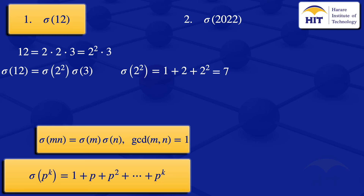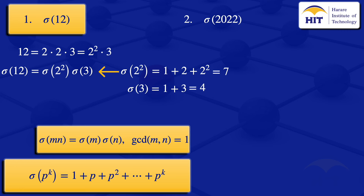Now for sigma(3): 3 is a prime number, so it's 3 to the power 1. Taking p = 3 and k = 1, the formula gives 1 + p, so sigma(3) = 1 + 3 = 4. Substituting these values, sigma(12) = 7 × 4 = 28. So the sum of divisors of 12 is 28.